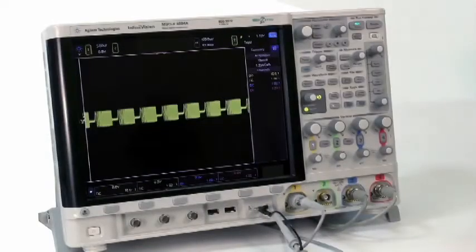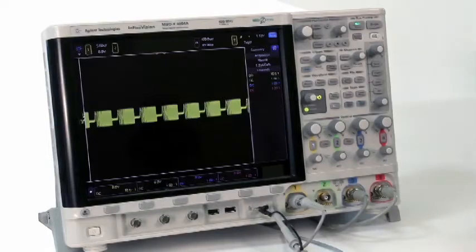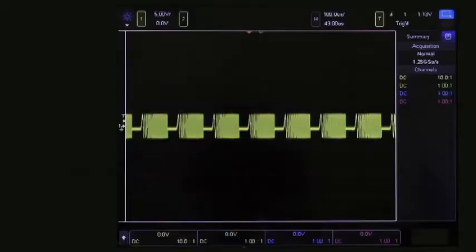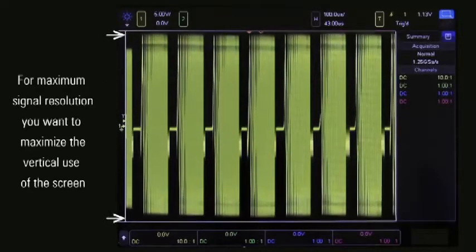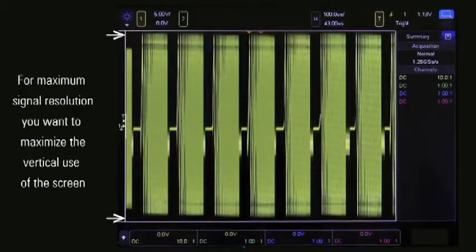Let's look at the Agilent 4000X Series. First, let's maximize the use of the scope's 8-bit digitizer. 8 bits translates to 256 discrete voltage levels on screen, so for the highest signal resolution, you'll want to use all of them.